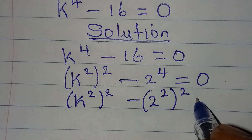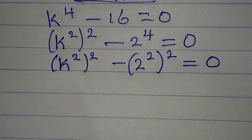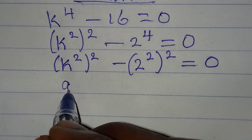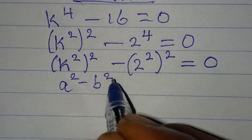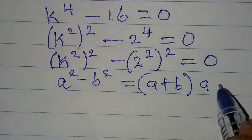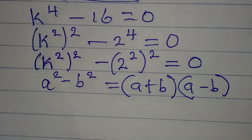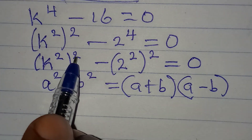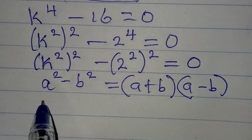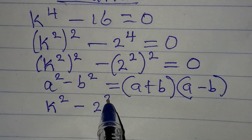From here we apply the difference of two squares. Let me show you: if you have a squared minus b squared, this becomes a plus b times a minus b. This is called the difference of two squares. Now we have a square inside and a square outside, so we can apply this same rule.